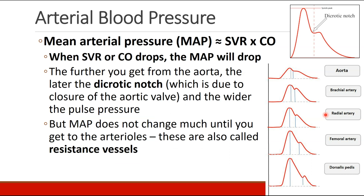This is an arterial pressure waveform. We can see systole, diastole, and this dicrotic notch, which occurs at the closing of the aortic valve. Mean arterial pressure can be approximated as the product of systemic vascular resistance and cardiac output. So if your systemic vascular resistance — the tightness of your vessels — or your cardiac output drops, mean arterial pressure will drop.